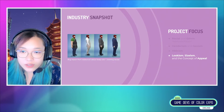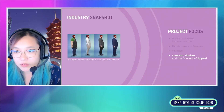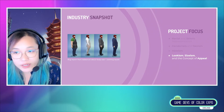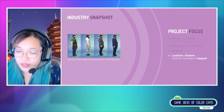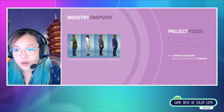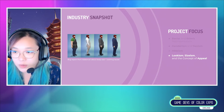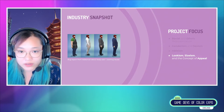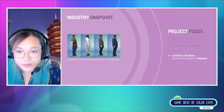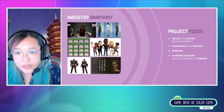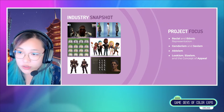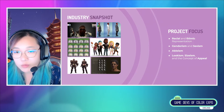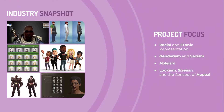And of course there's also lookism, sizeism, and the concept of appeal. Having a larger body size, having body hair, having a skin condition — there are lots of features society discriminates against because of harmful definitions of attractiveness and appeal that are carried into character creators. There are of course other issues like ageism, lack of representation of pregnancy, lack of cultural and religious representation, and more that I was not able to go into for this project, but maybe I can come back and address them in the future.